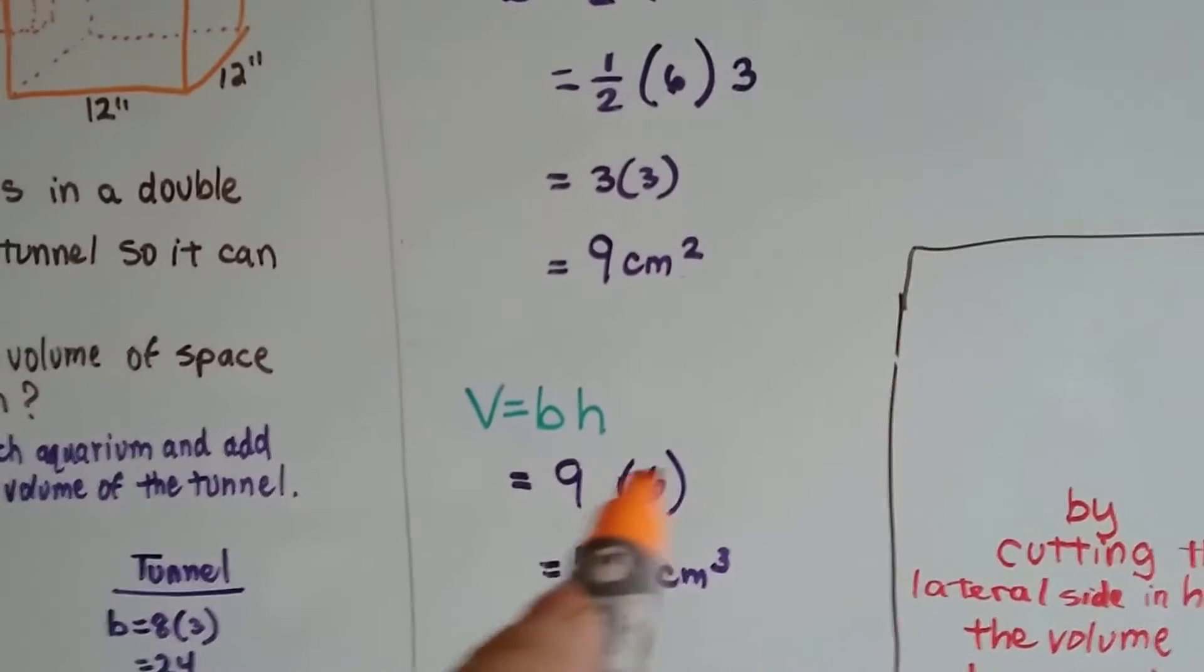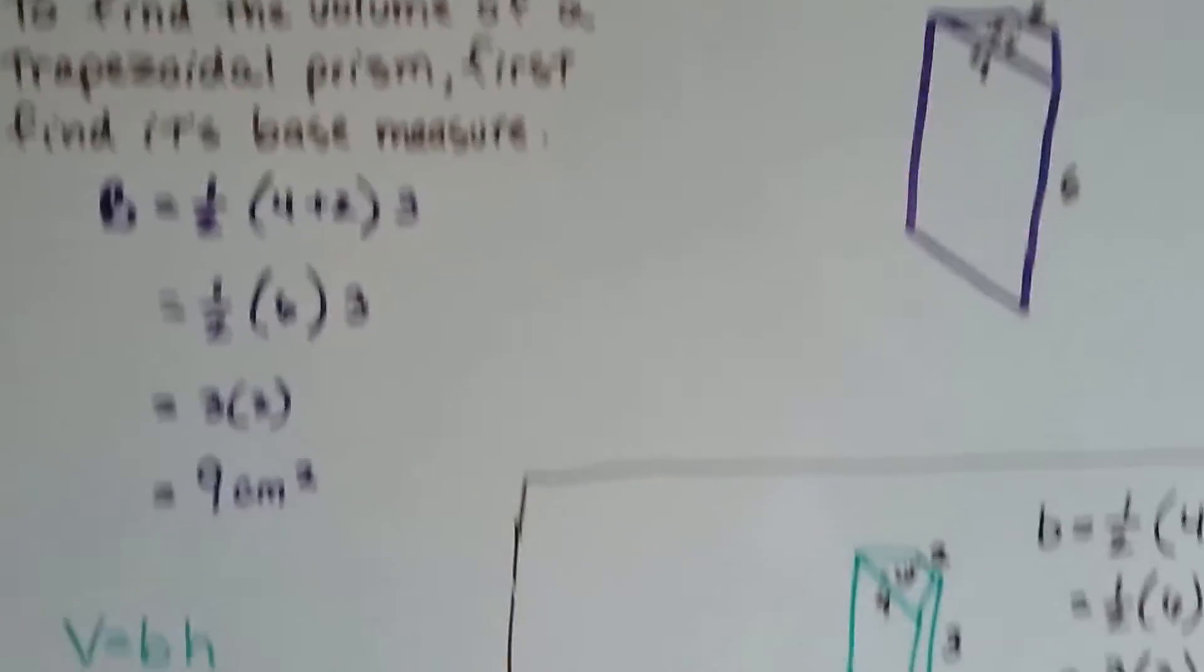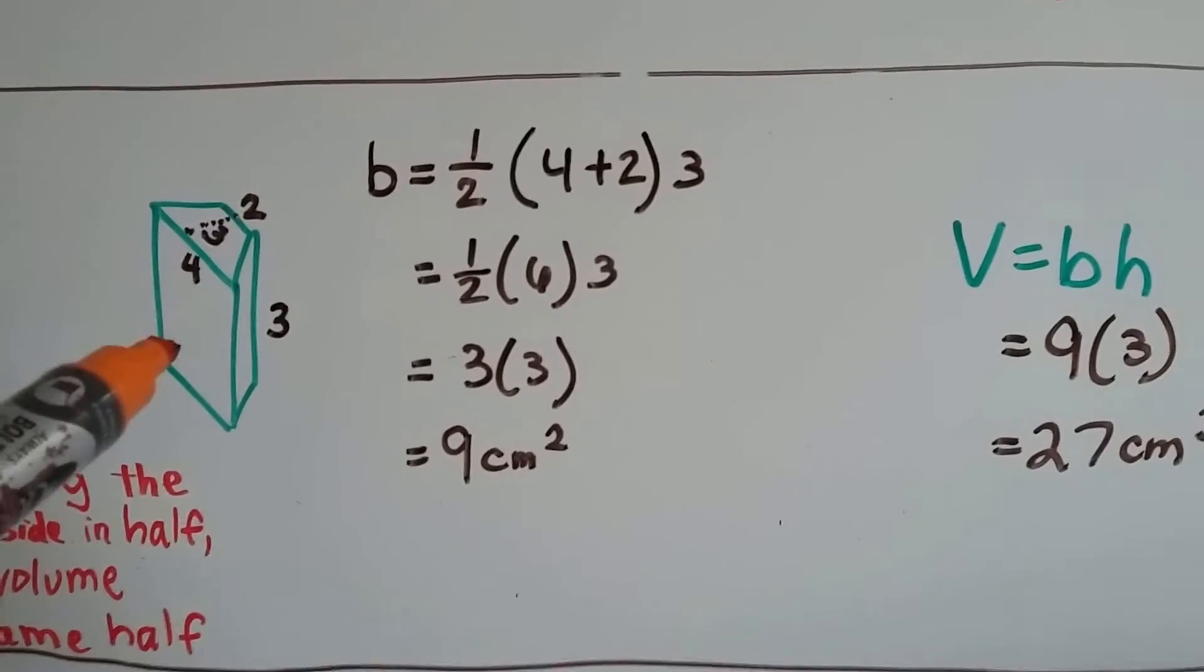Now what would happen if we cut this in half, the 6? Instead of a 6, what if it were a 3? So we cut it in half to a 3 and all the other measures are the same.